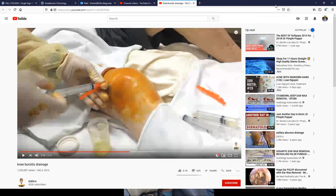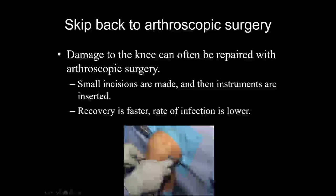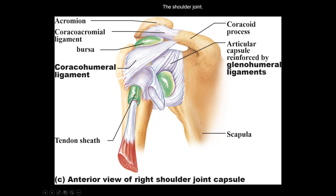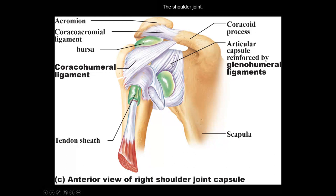That's how they do ACL reconstruction when a person has torn that ligament. Moving to the shoulder: label the picture — call these bursa and this a tendon sheath. The joint is made by the humerus and the scapula — specifically the head of the humerus articulates with the glenoid cavity. The primary ligament reinforcing stability is the coracohumeral ligament, which attaches on the humerus up to the coracoid process of the scapula.